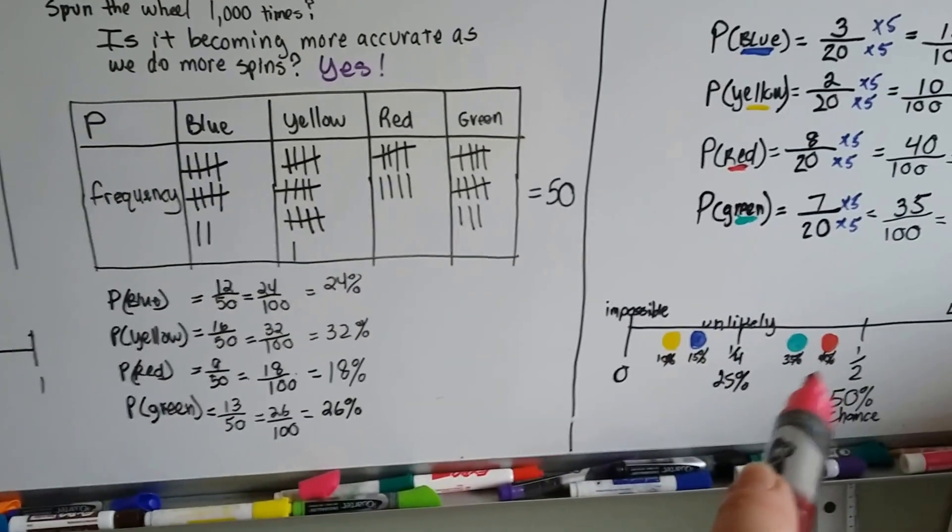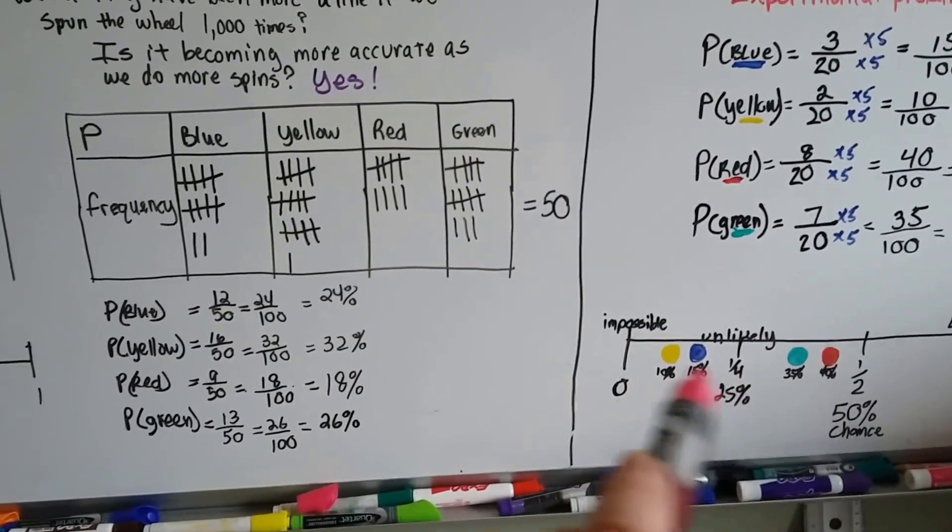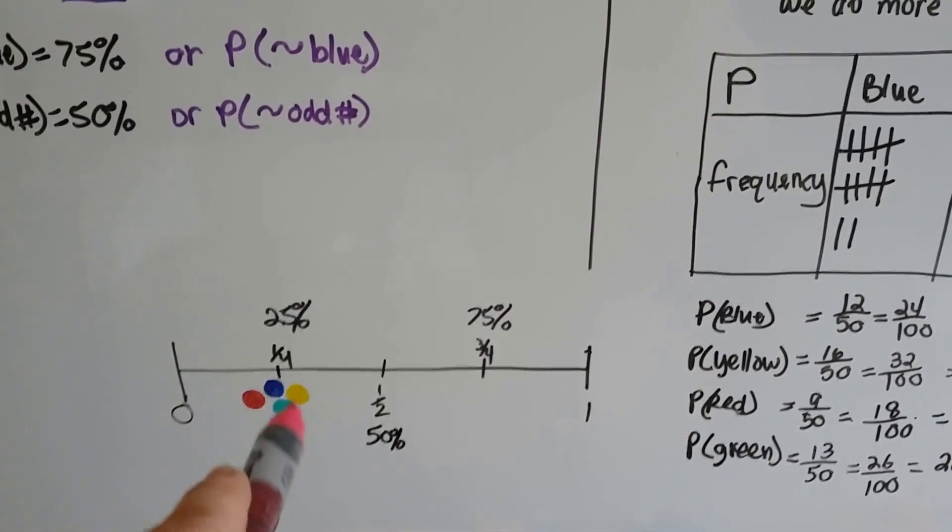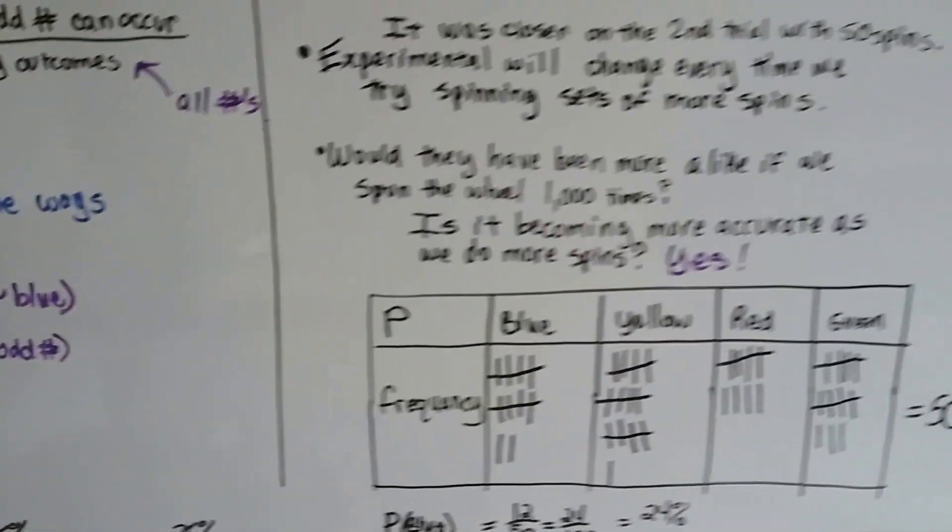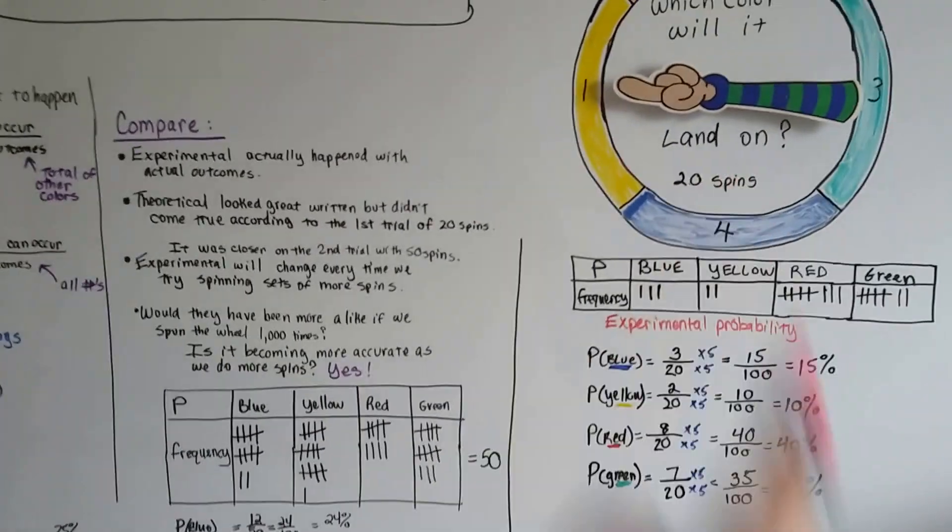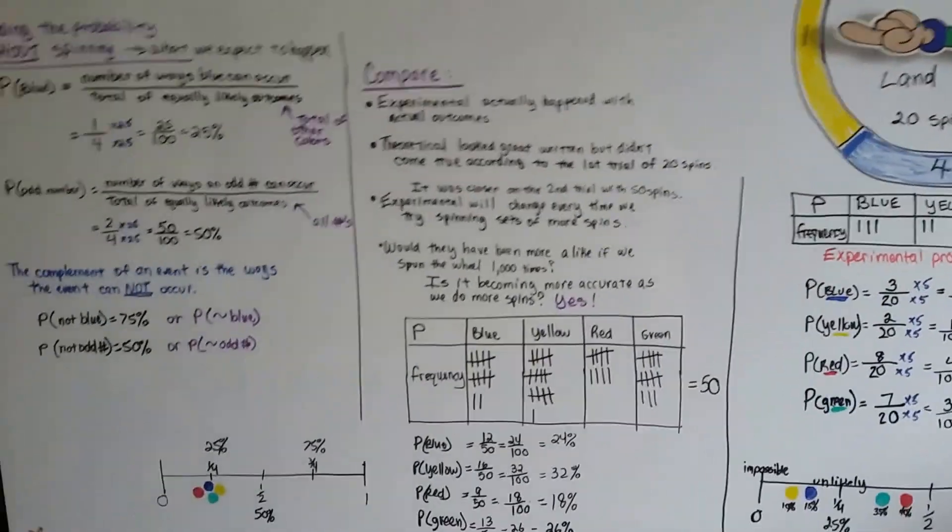So, when we look at our number line over here, we can see how far apart the colors are. But when we look at it over here, look at how they're all clustered together. When we did 50 spins, I wonder what would happen if I did a thousand spins. I've got a lot of other things I need to do than to spin that thing a thousand times. But I bet it would become more accurate.